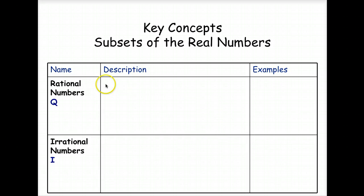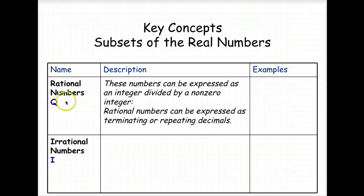We also have rational numbers. Now they're abbreviated with the letter Q. These numbers can be expressed as an integer divided by a non-zero integer. Rational numbers can be expressed as terminating or repeating decimals. So just think that you can write these as a fraction and when you do your division, they will come out to be terminating or repeating decimals.